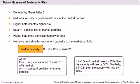In some rare cases, you might come across a negative beta — that is, the asset and the market move in opposite directions.